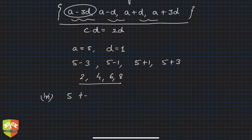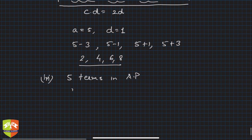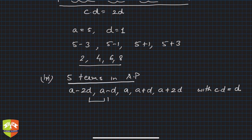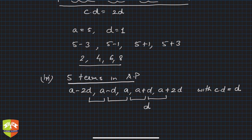If you have to pick five terms in AP, you can write them as a minus 2d, a minus d, a, a plus d, and a plus 2d, with a common difference of d. You can verify that the common difference between every two consecutive terms is d.